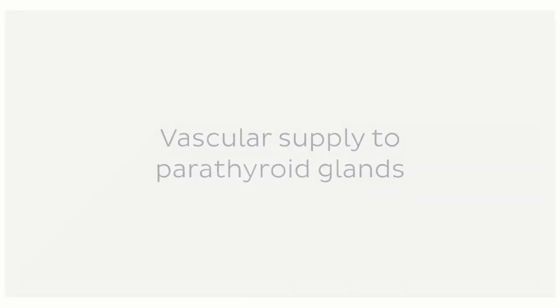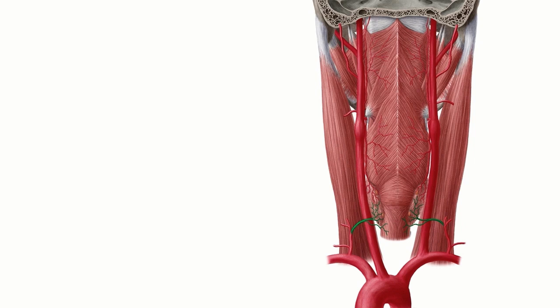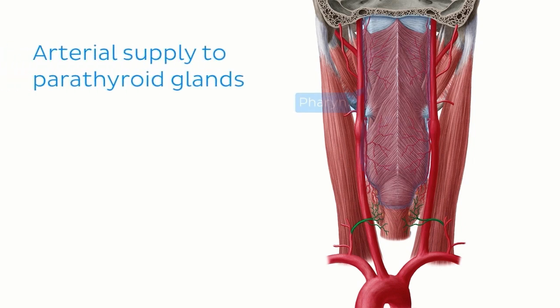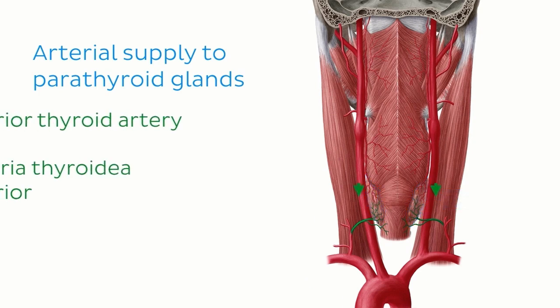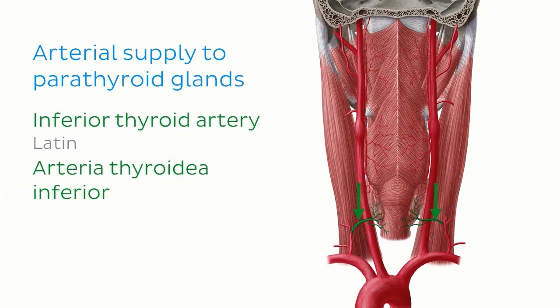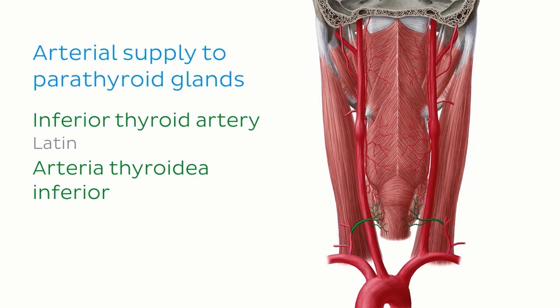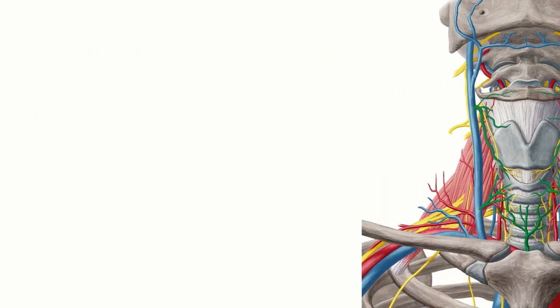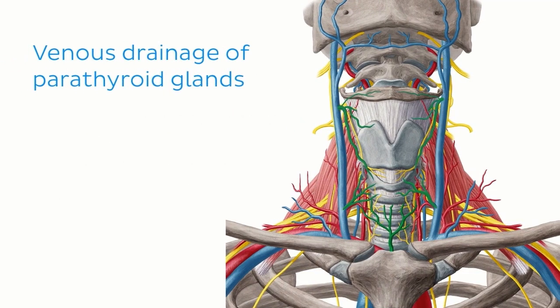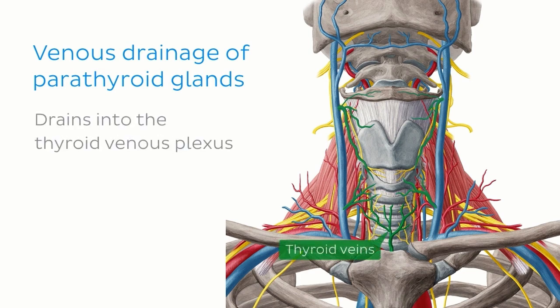We'll now explore the vascular supply to the parathyroid glands, starting with the arteries. A lot of it is quite similar to the thyroid gland. Looking at the pharynx and thyroid gland from a posterior view, the inferior thyroid arteries arising from the thyrocervical trunk are highlighted in green. This artery supplies the posterior aspect of the thyroid gland, and since the parathyroid glands are located on the posterior aspect, it makes sense that they also receive their blood supply from the inferior thyroid artery. The venous drainage of the parathyroid glands is also shared with the thyroid gland — blood from the parathyroid glands drains into the thyroid venous plexus and then follows the paths of the thyroid veins.